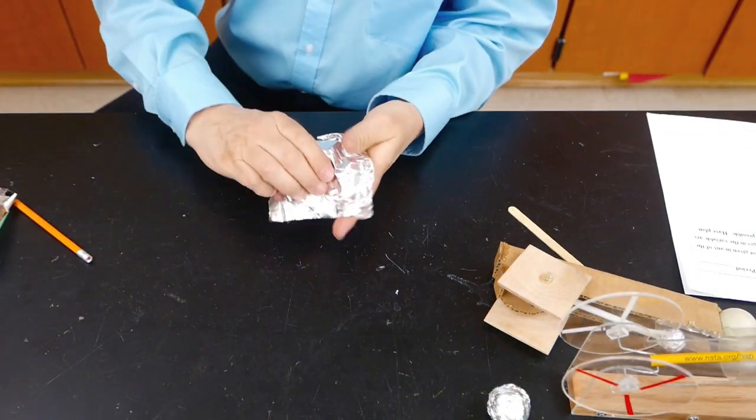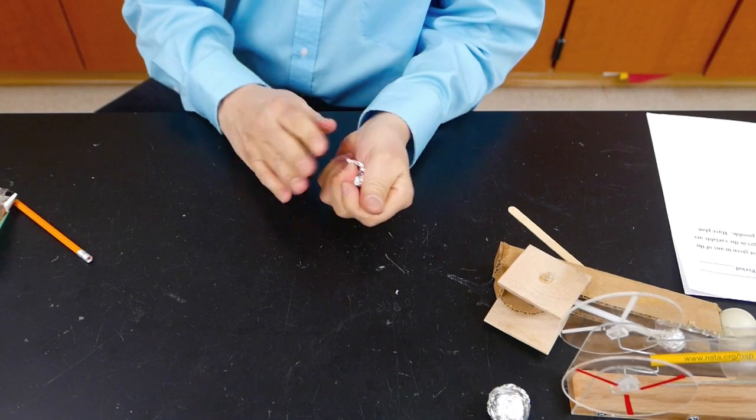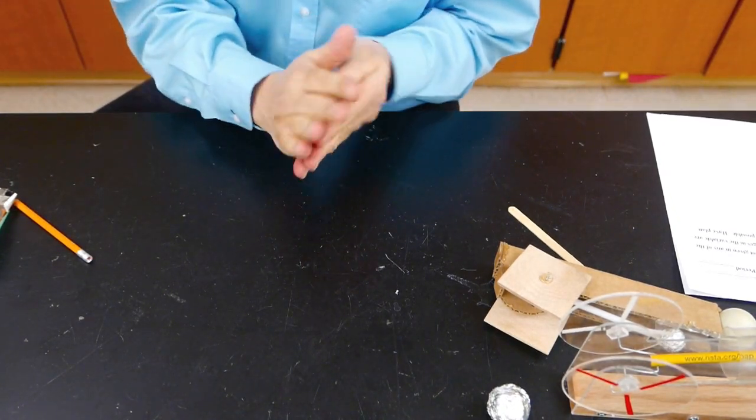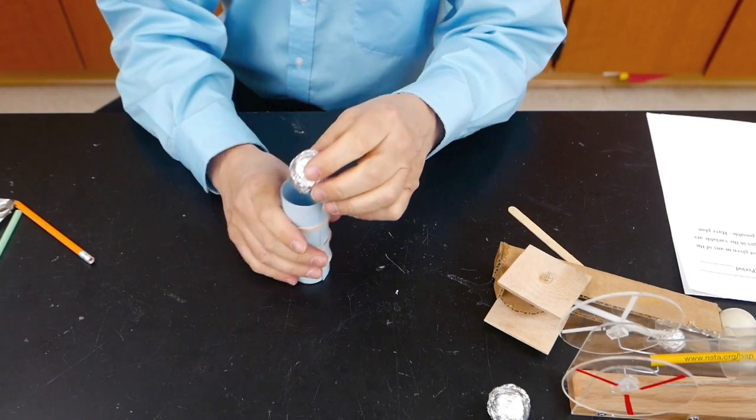I'm then going to cover it with a couple sheets of aluminum foil. Once again rolling it, trying to get it as round as I can. And shape it until it fits that tube.